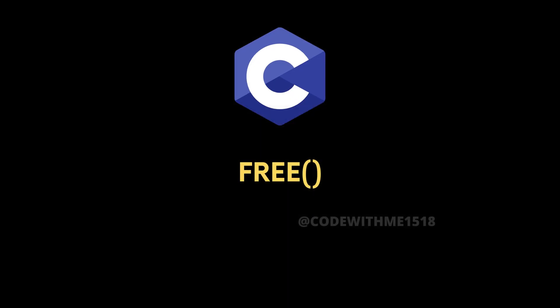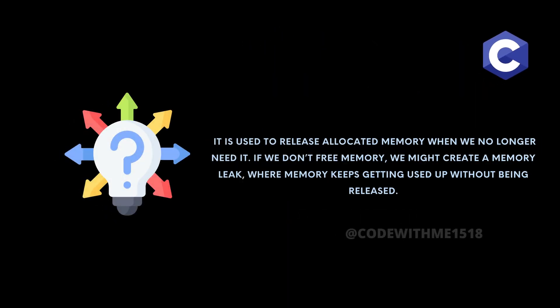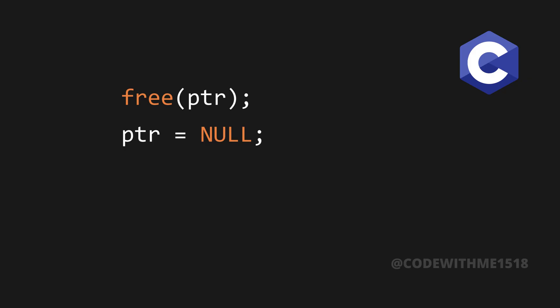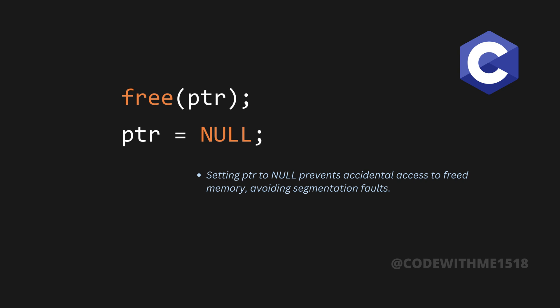Finally, we have free, which is used to release allocated memory when we no longer need it. If we don't free memory, we might create a memory leak, where memory keeps getting used up without being released. Here's how we free memory: free(ptr); ptr = NULL. Setting ptr to null prevents accidental access to freed memory, avoiding segmentation faults.